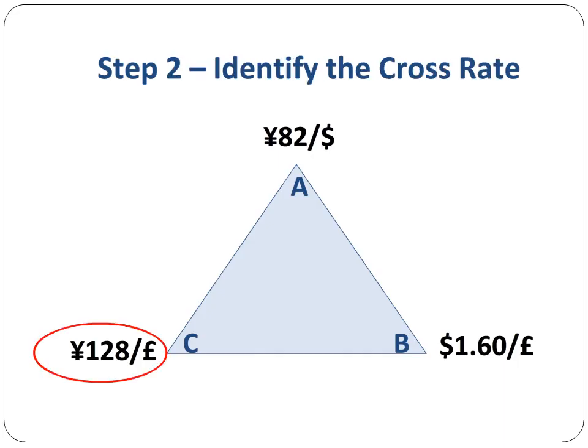In step 2, we need to identify the quoted cross rate. Since the quote provided by Bank C pairs 128 yen to the British pound and not the US dollar, that is the quoted cross rate.